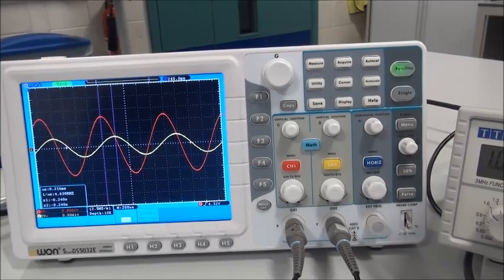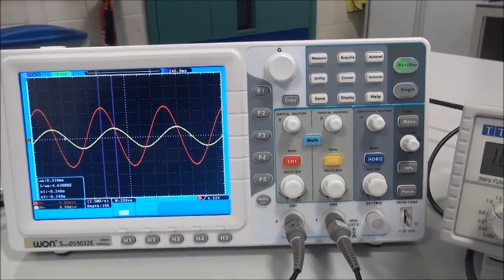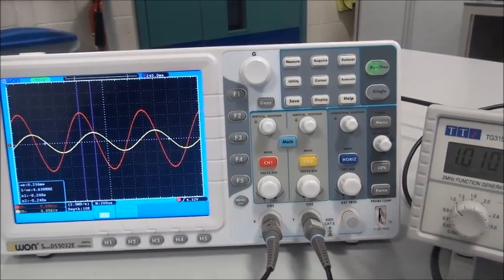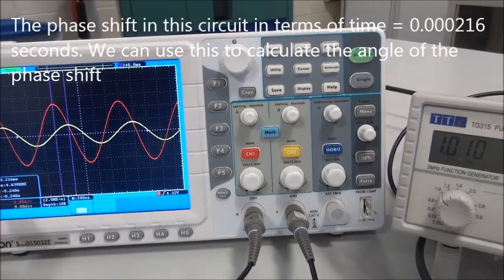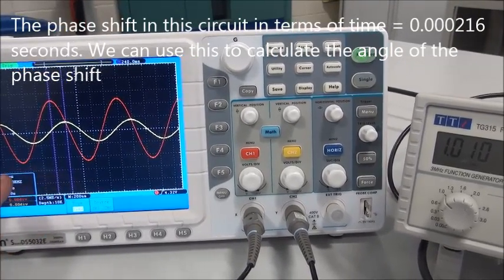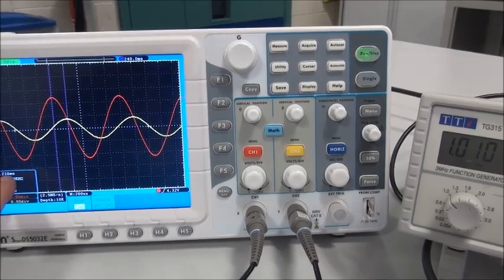So, they're out of phase with each other, and we could calculate how much they're out of phase. First thing we'd need to know is the change in time between them. So, this has got a change in X, change in the X dimension of 0.216 milliseconds.